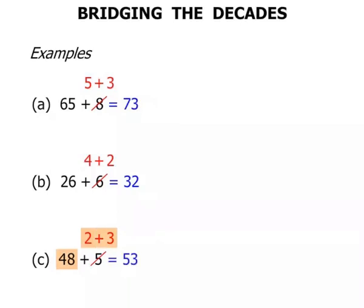The next one. 32 plus 9. Well, 32 to get it up to the decade, to get up to 40 we need to add 8. So the 9 we're going to break up as 8 and 1. So let's see what we've got. 32 plus 8, that's 40. And 40 and 1 equals 41.